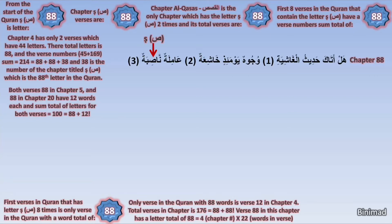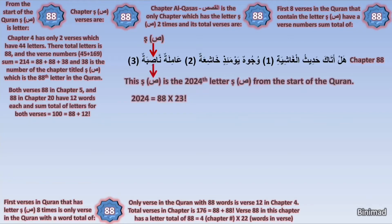This Saad is the 2024th Saad from the start of the Quran. Amazingly, it is a multiple of 88, as 88 times 23 equals 2024. You have seen already that Saad is the 88th letter from the start of the Quran, and 88 is also the number of this chapter. Generally, the letter has revolved concretely around the number 88.